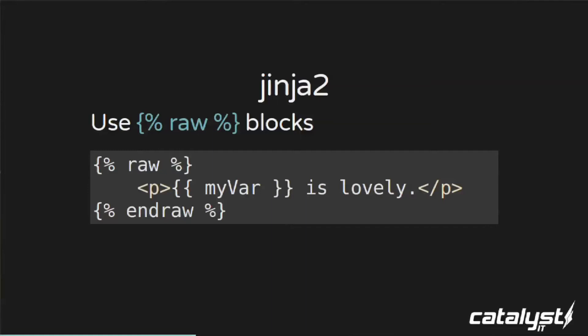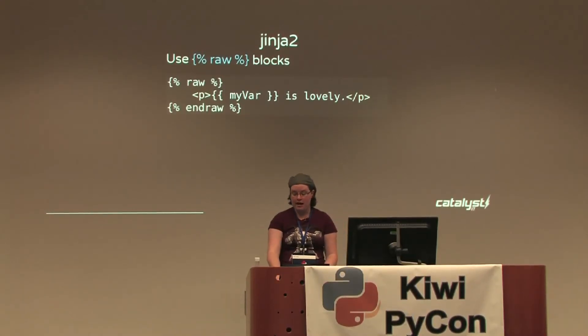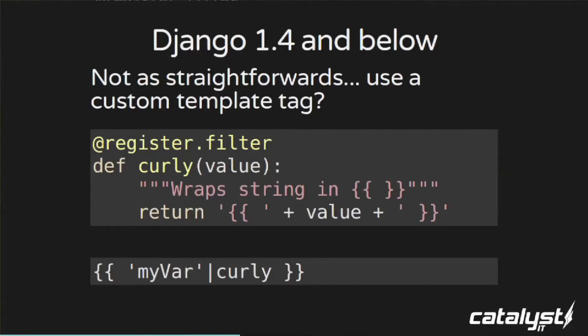Jinja2 has the concept of a raw block: wrap anything you don't want the Python templating engine to evaluate in a raw/endraw block. Similarly, Django 1.5 and 1.6 have a verbatim block — wrap whatever you don't want evaluated in verbatim/endverbatim. That's really nice and simple. If you're still on Django 1.4, it's not quite as straightforward — you can create your own custom template tag to take a value and spit it back out with curly braces. It's a nasty hack, so just use Django 1.5 if you're starting a new project.